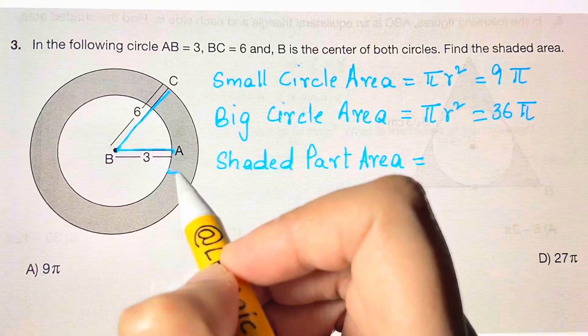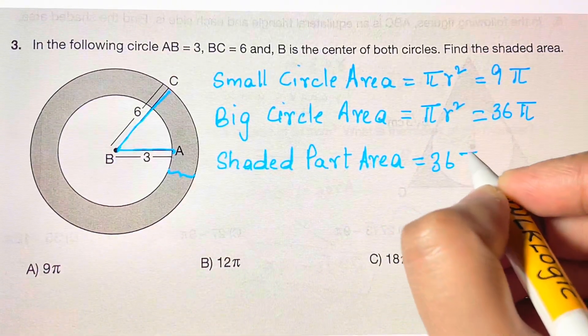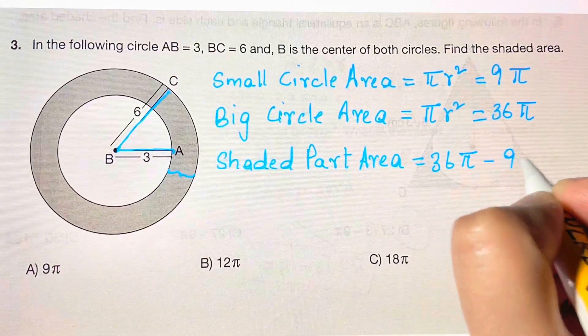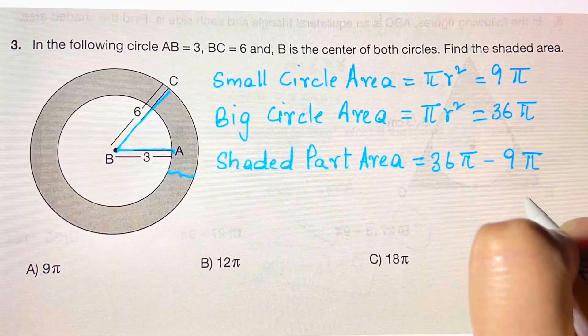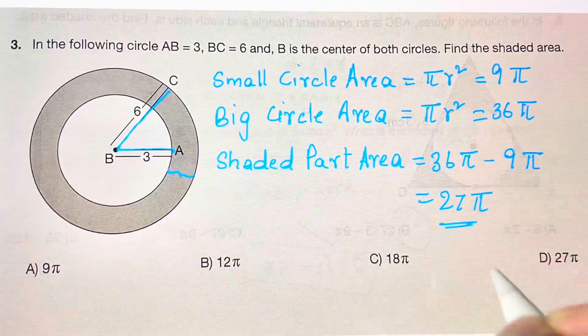The shaded area equals the bigger circle area minus the smaller circle area. So that's 36π - 9π = 27π, and that's your answer.